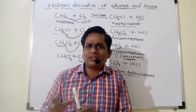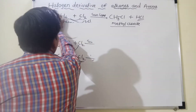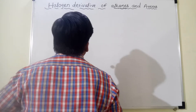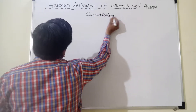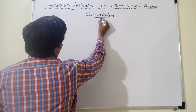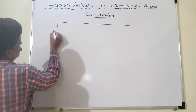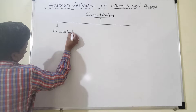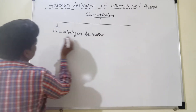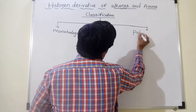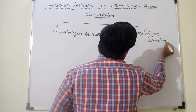Now we see the classification of halogen derivatives of alkanes — a very important classification. Halogen derivatives of alkanes are mainly classified into two types: one is the monohalogen derivatives, and the second one is the polyhalogen derivatives.